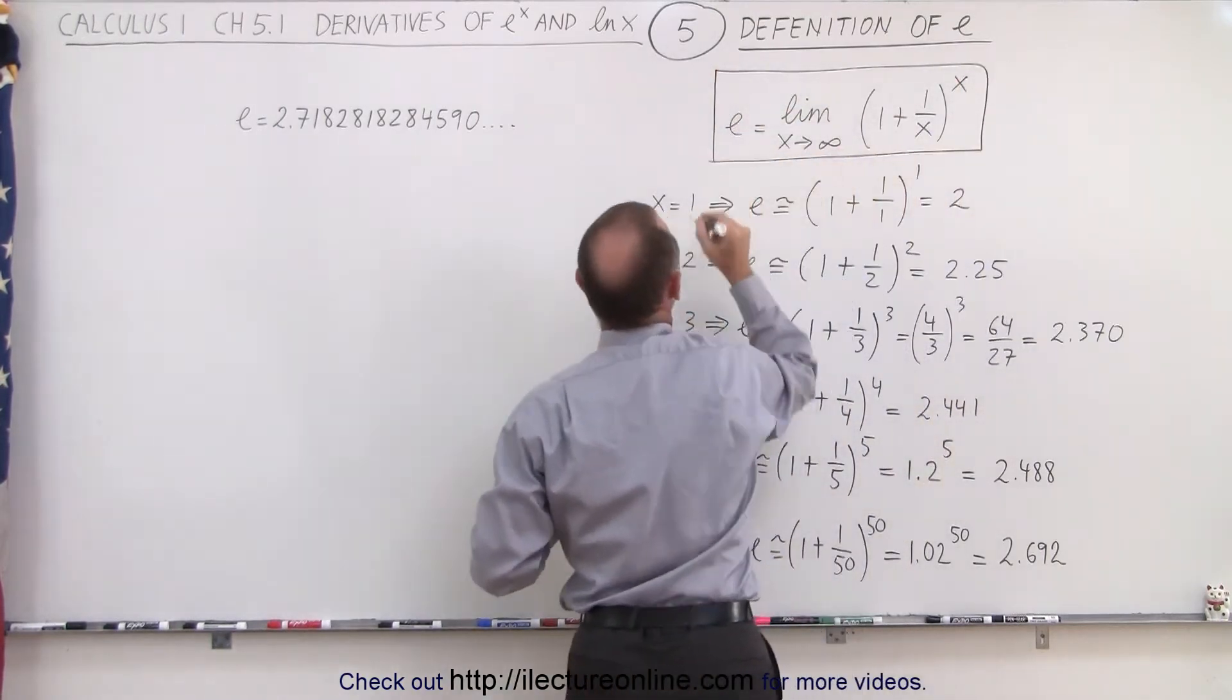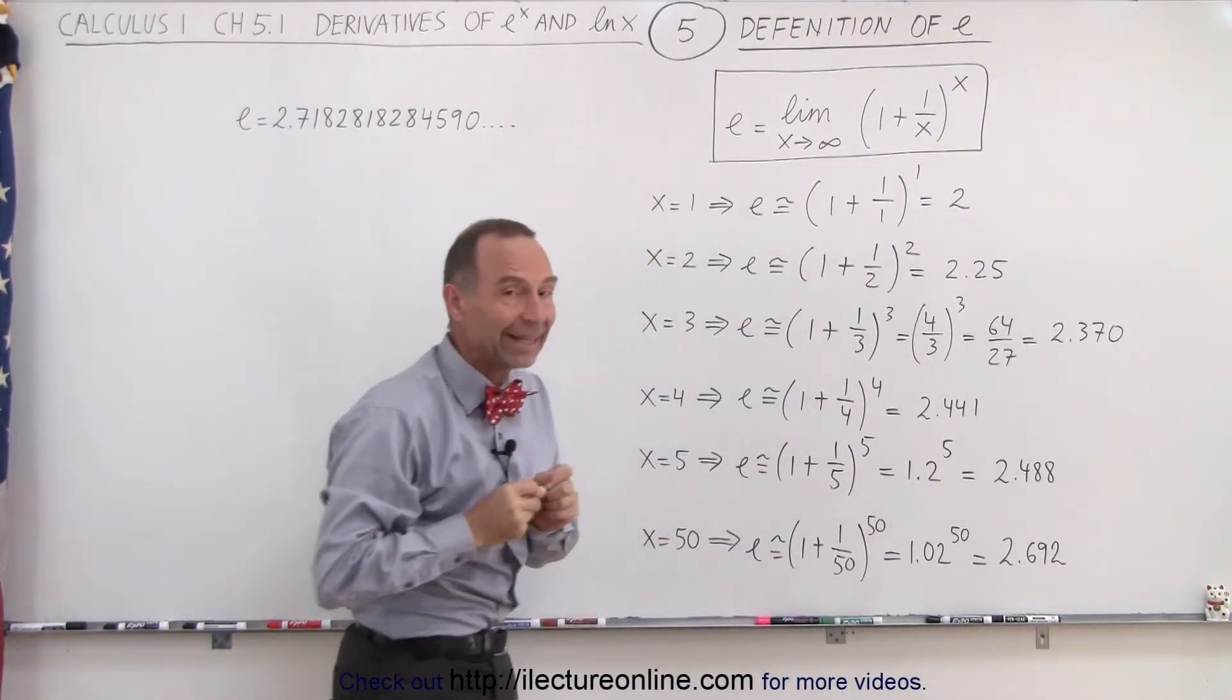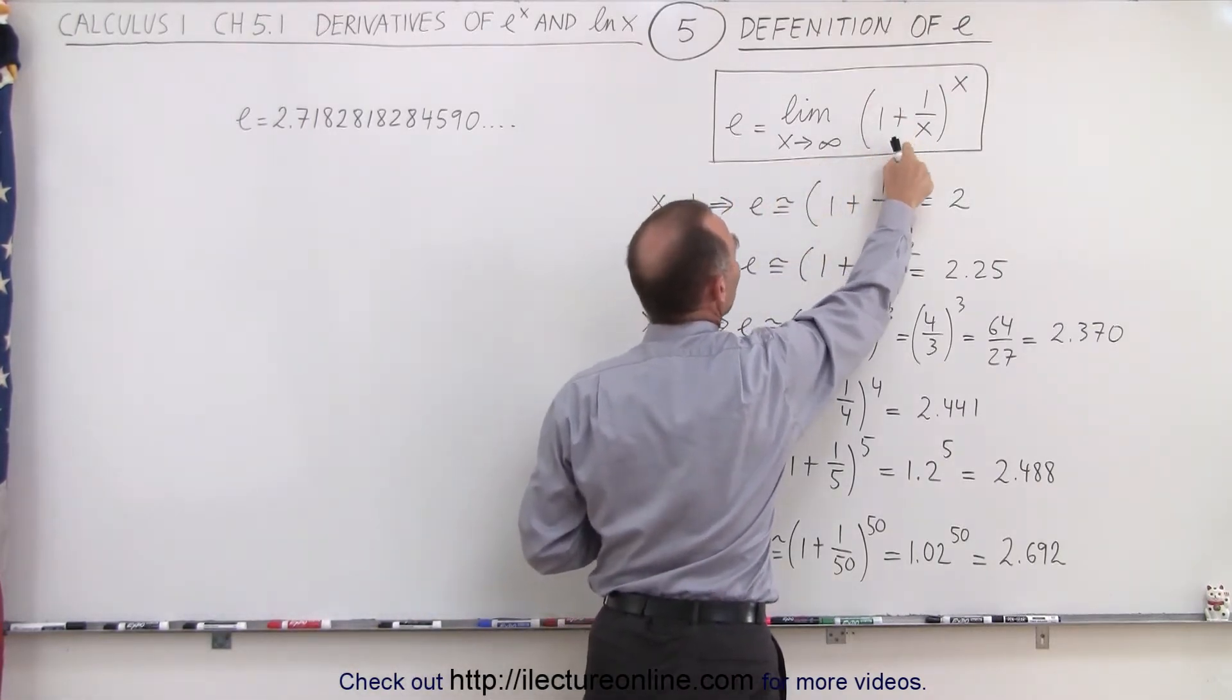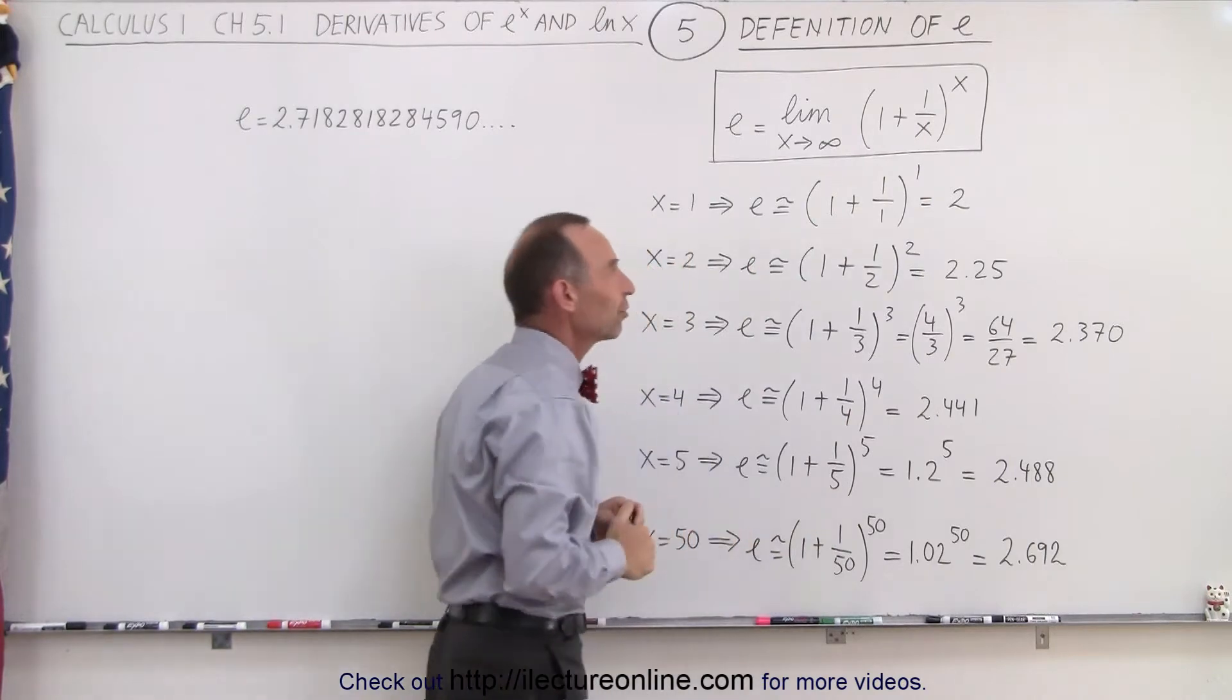Let's box this. As you can see that the number e can be defined as the limit as x goes to infinity of the quantity 1 plus 1 over x raised to the x power.